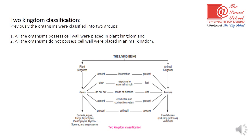In the plant kingdom, locomotion is absent, while in the animal kingdom locomotion is present. The response to external stimuli is slow in plants but rapid in animals. Regarding mode of nutrition, plants perform the process of photosynthesis to make food, while animals eat food and have the property of contractility and conductivity.